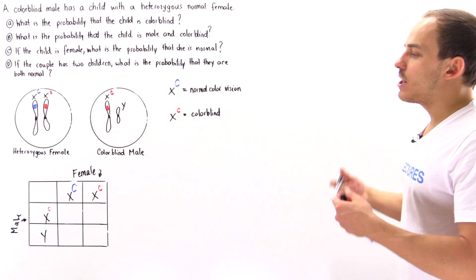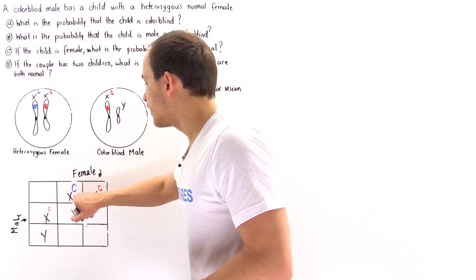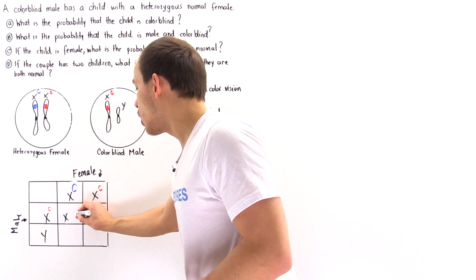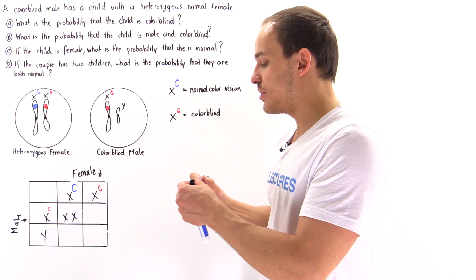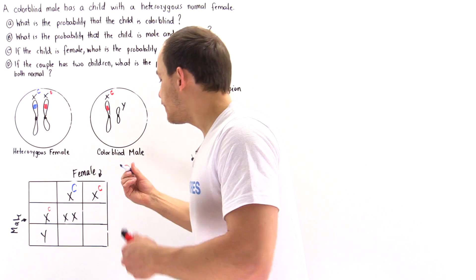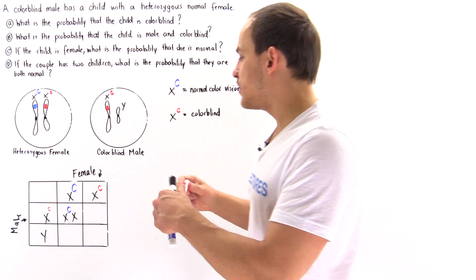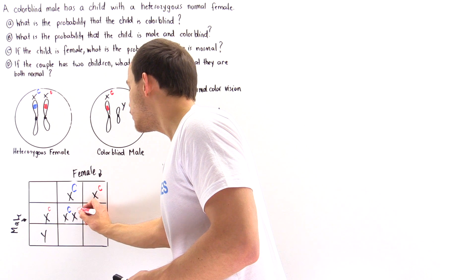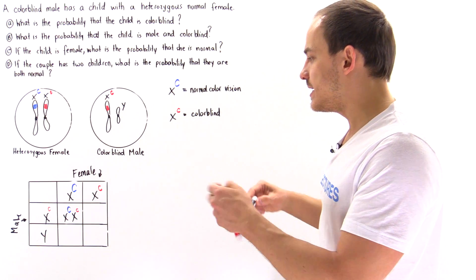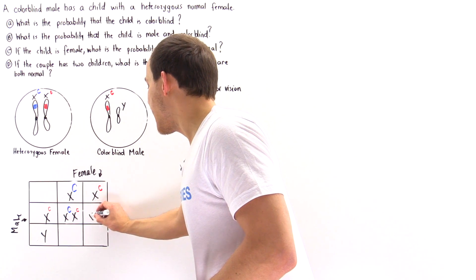Now let's complete the Punnett square. When the X sperm combines with the normal X egg to produce the zygote, the zygote will have two X chromosomes — meaning we're going to have a female. This female will be heterozygous normal because the dominant uppercase C inhibits the recessive lowercase c.